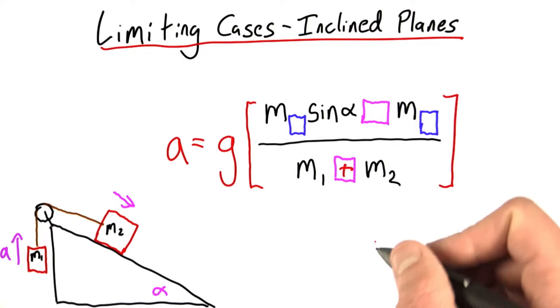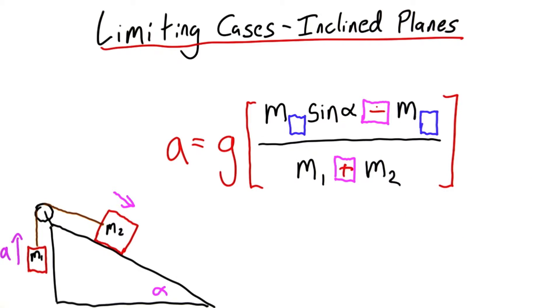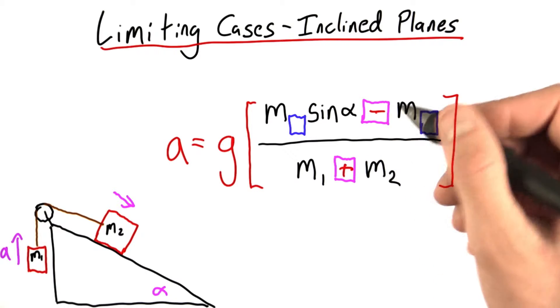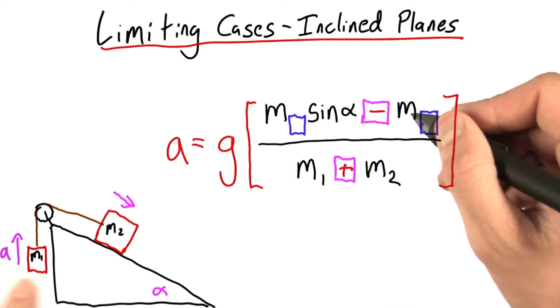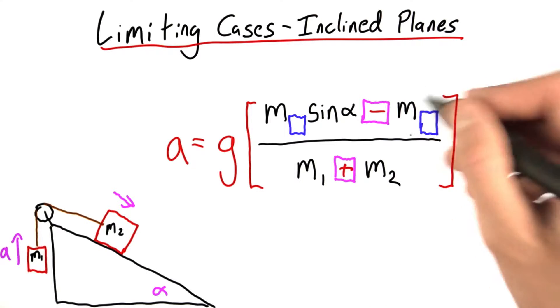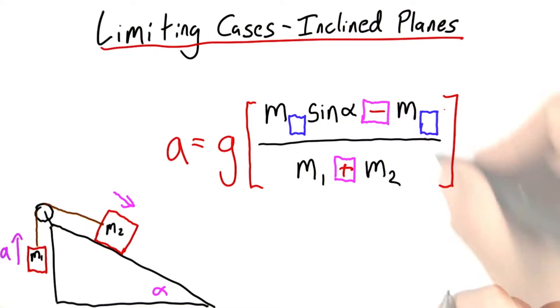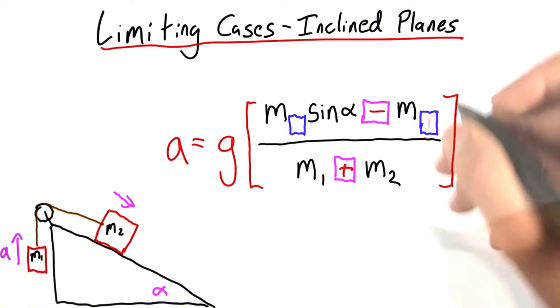Since negative acceleration is possible, this better be a minus sign. When will negative acceleration happen? When this term is really huge — putting it another way, when this term is really huge. That means this box better have a 1 in it.